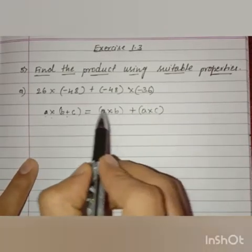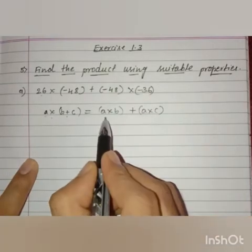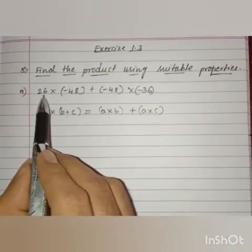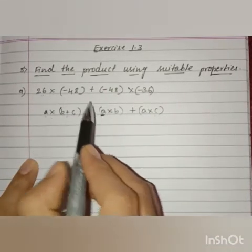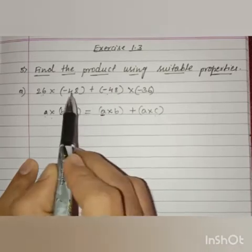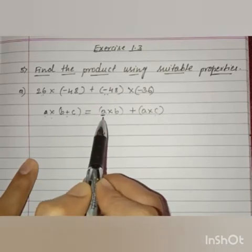So, now this expression is in the form of right-hand side. So, a means 48. It is repeated, isn't it? So, that a means 48.